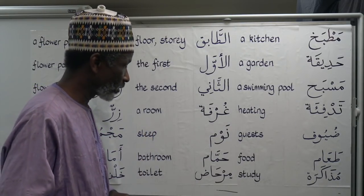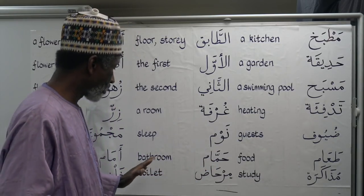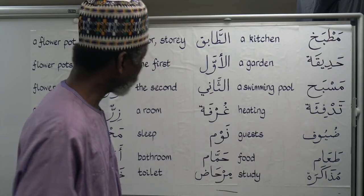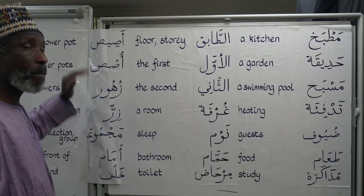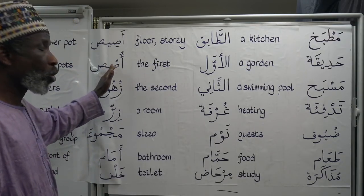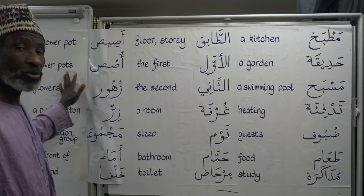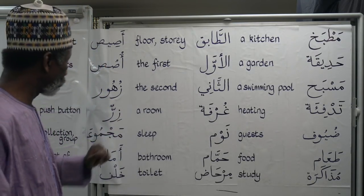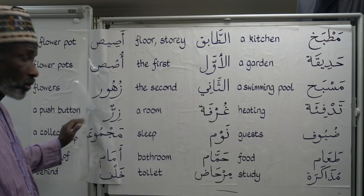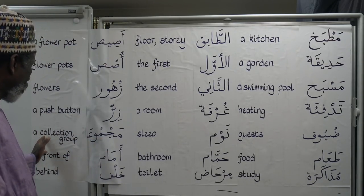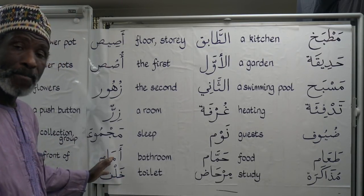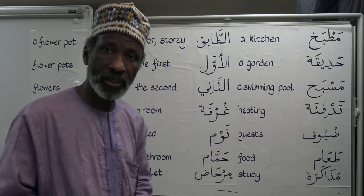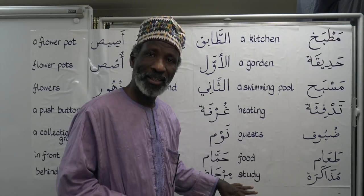Al-awwal — the first. Al-thani — the second. Ghurfa, ghurfatan — a room; the plural is ghuraf. Nawm — sleep. Hammam — bathroom. Mirhaad — toilet. Asees — a flower pot; usus is the plural flower pots. Zuhoorun — flowers. Zirrun — a push button. Majmua — a collection or group. Amam — in front of. Khalf — behind.